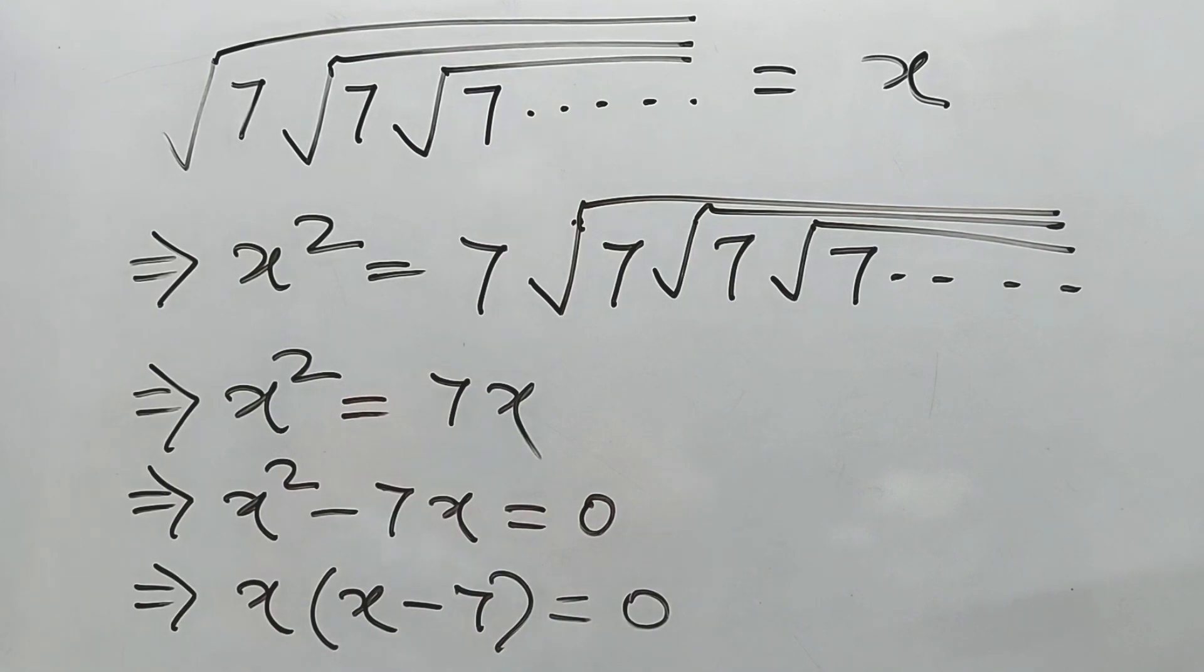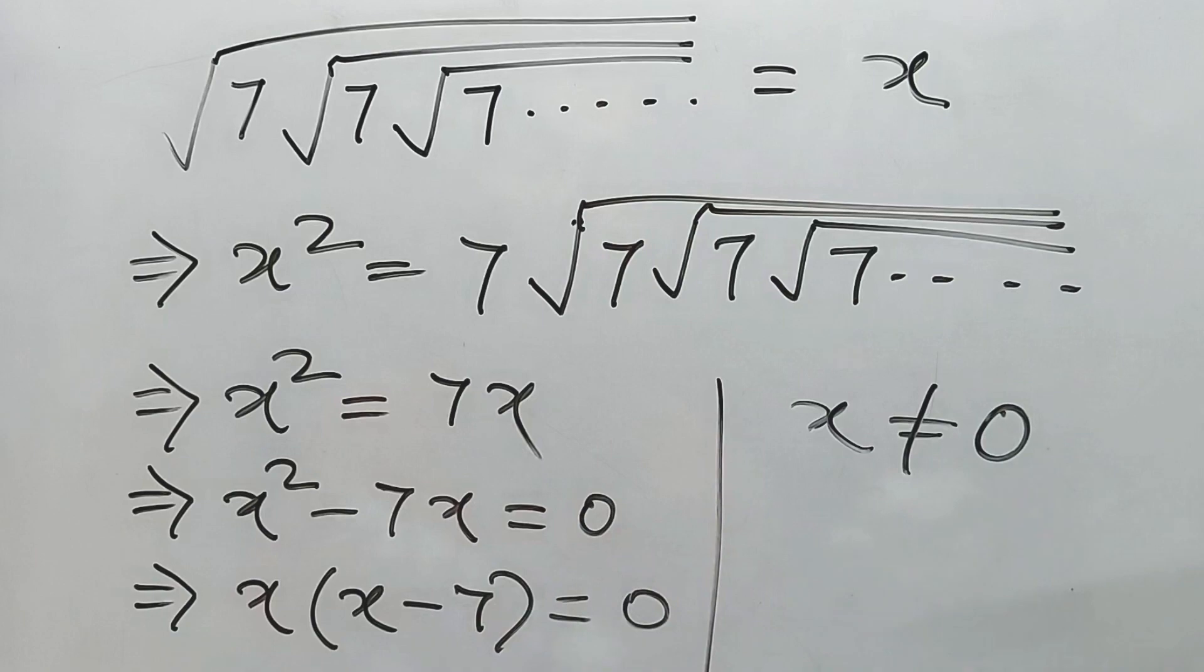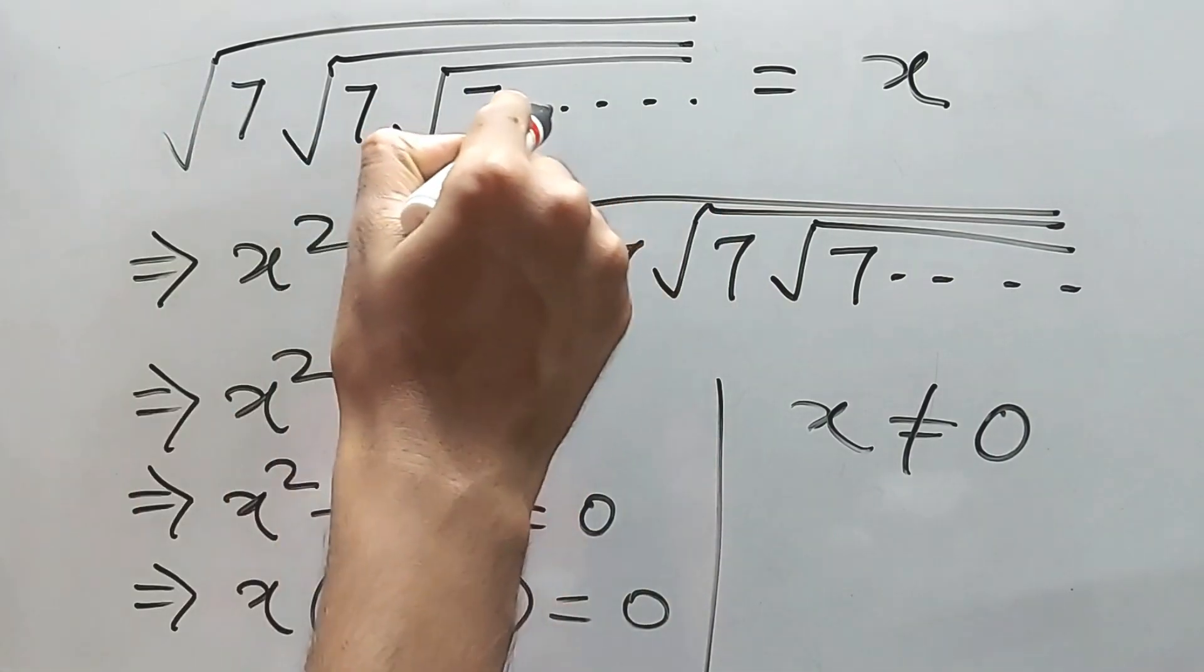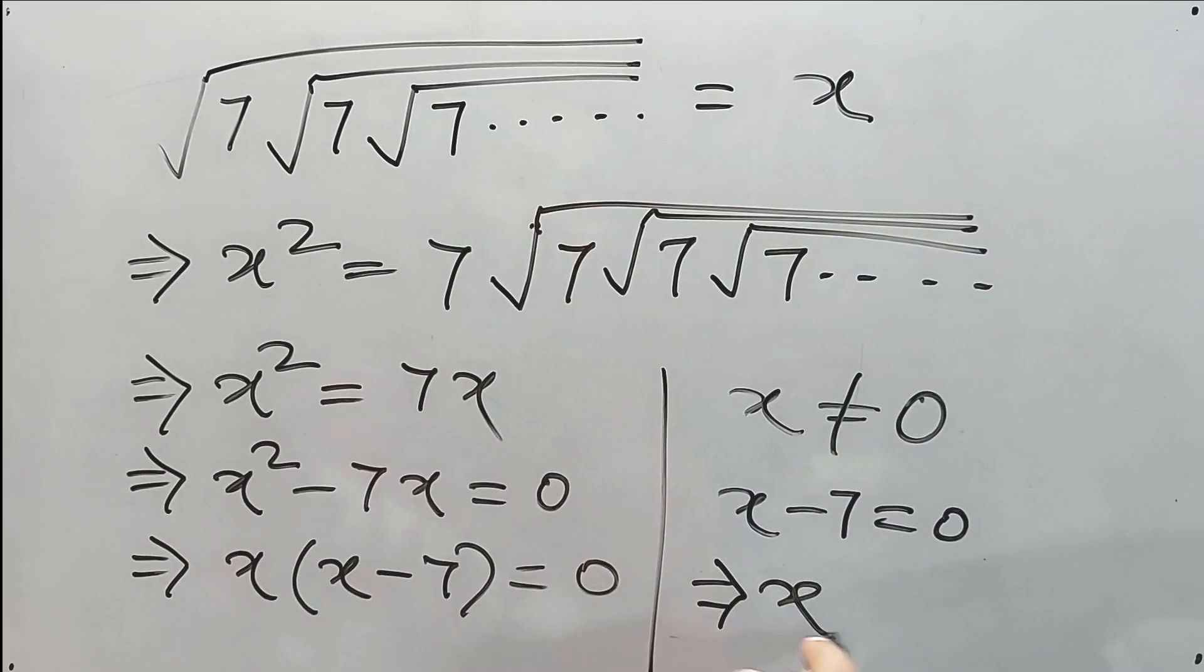Now, either this one is equal to 0 or this one is equal to 0. But x is not equal to 0 because there will be some value of this. Therefore, this one is equal to 0. That means x minus 7 is equal to 0, which implies x is equal to 7.